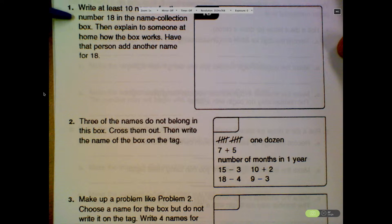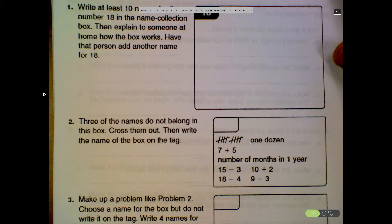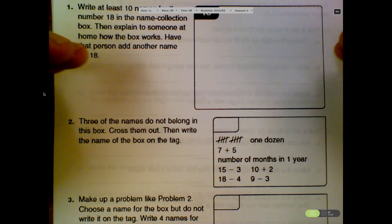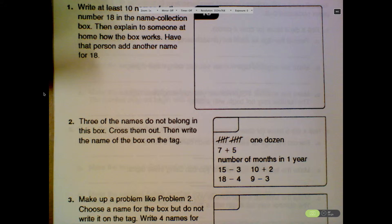It says write at least 10 names for the number 18 in the name collection box. Then explain to someone at home how the box works. Have that person add another name for 18. You guys know this. We've done this. Give me an example of something that could go in that box.